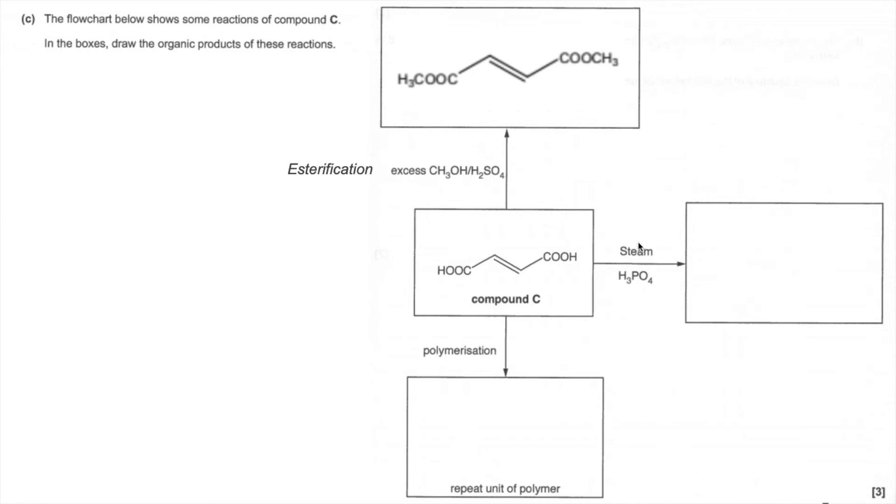So steam and phosphoric acid. Now that's a hydration reaction, so basically going to add H2O across the double bond. So we'll put an H on one of the carbons of the double bond and an OH group on the other one. It doesn't matter which way around you add it because this is a symmetrical molecule.